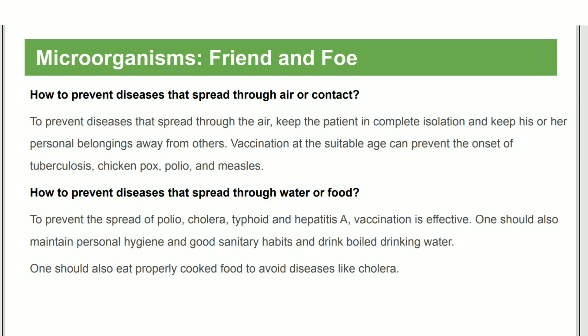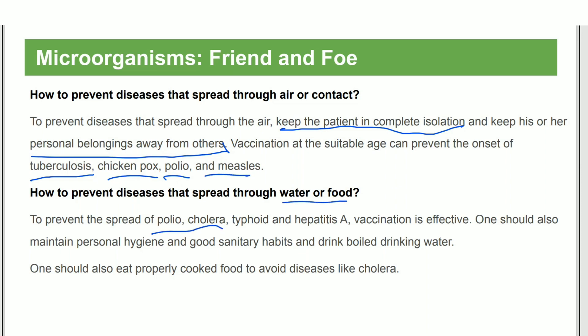To prevent the spread of air-borne diseases, a patient should be isolated, and their personal belongings — like glasses — should not be shared. Vaccines are available for diseases like tuberculosis, polio, and measles. Water- and food-borne diseases like cholera, typhoid, and hepatitis can be prevented by vaccination and personal hygiene.